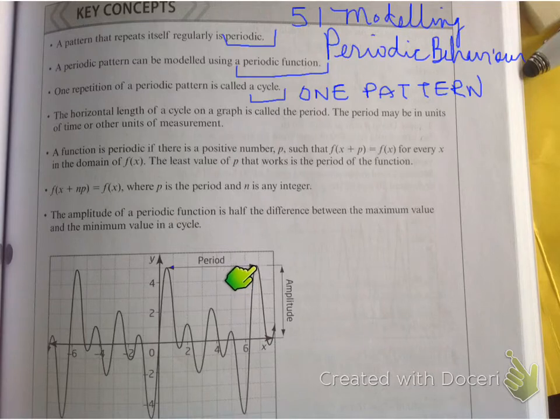Basically, you take the maximum, subtract the minimum, and divide that by two. Alright, now, let's trace one cycle. Right there is a trace of one cycle.